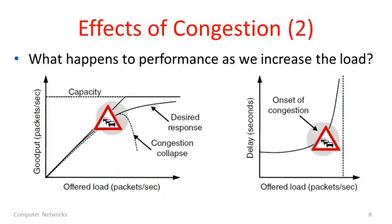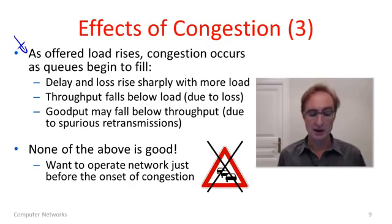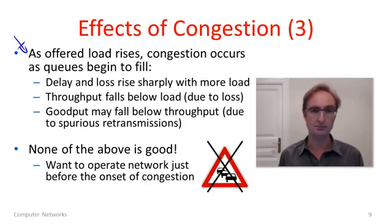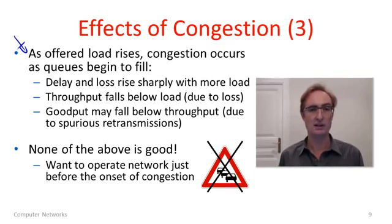Operating the network in a congested state is not good. We begin to lose packets so we have to retransmit more, and we're adding delay to packets through the network. We're not getting any more useful information through, yet spending a longer time to send it — it's a loss. Congestion occurs as offered load rises and queues start to fill. Delay and loss both rise sharply as we approach capacity. Throughput can fall because of loss, and goodput can fall even more if we're retransmitting many times. So we would like to operate the network before reaching a congested state, while still using all of the capacity — it's a bit of a dance.